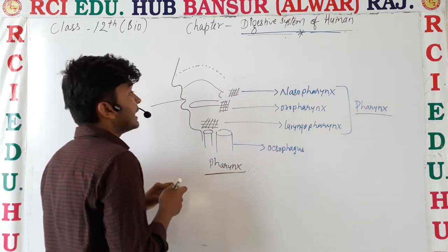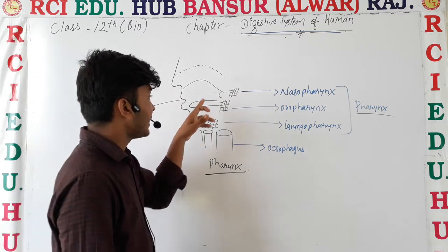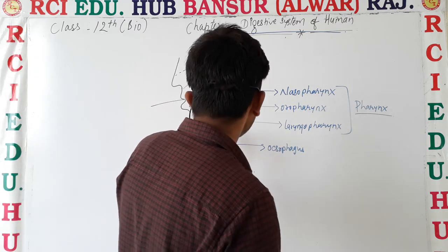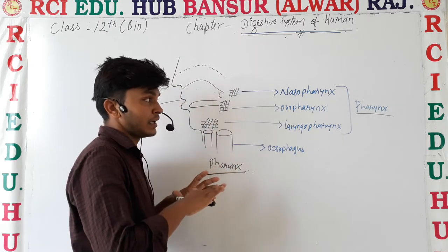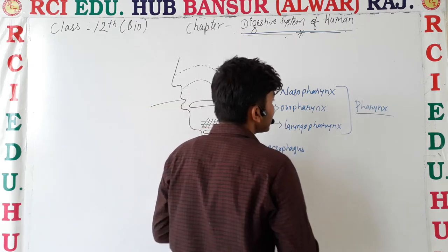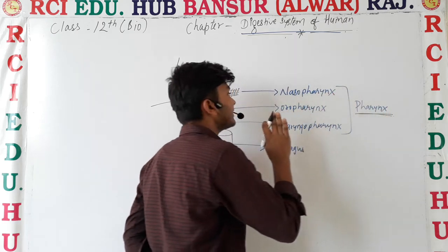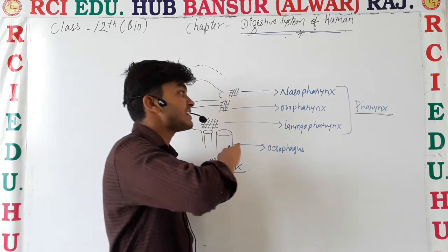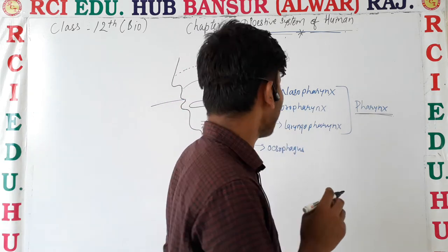Pharynx is also found connected to the nasal chamber and the buccal cavity. The pharyngeal region is divided into three parts.